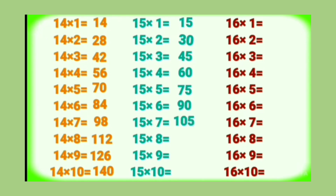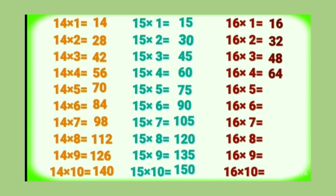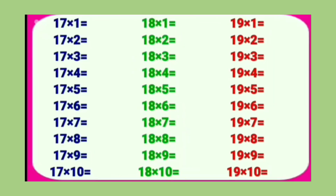15 9's are 135, 15 10's are 150. Table of 16: 16 1's are 16, 16 2's are 32, 16 3's are 48, 16 4's are 64, 16 5's are 80, 16 6's are 96, 16 7's are 112, 16 8's are 128, 16 9's are 144, 16 10's are 160.